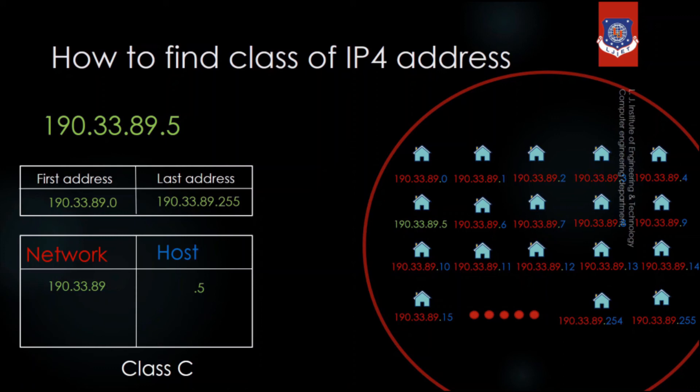Generally, the first address and the last address are not allocated to any devices, because the first address represents the whole network and the last address is the broadcast address.